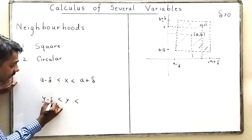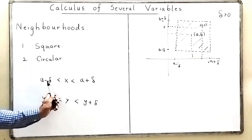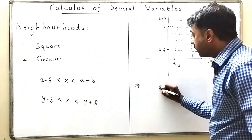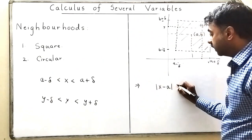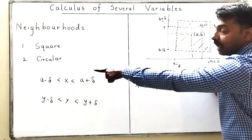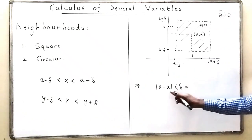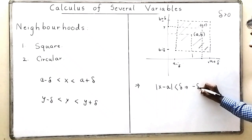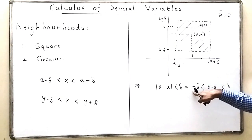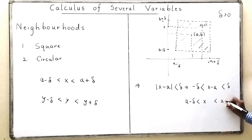In short, how do we write this? x lies between a minus delta and a plus delta, and y lies between b minus delta and b plus delta. We write x between a minus delta and a plus delta as: modulus of x minus a is less than delta. The meaning is that minus delta is less than x minus a, which is less than delta, and adding a to all sides gives a minus delta less than x less than a plus delta.